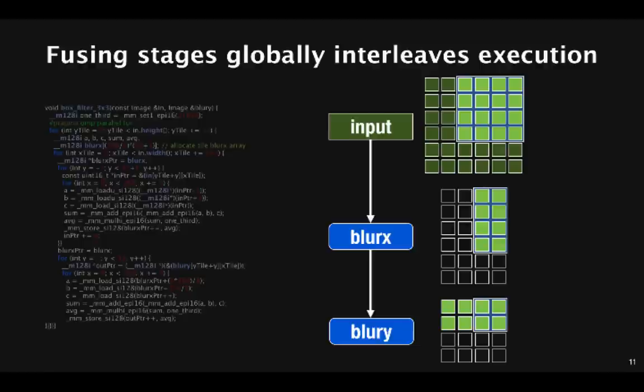This improves producer-consumer locality by keeping all the intermediate data nearby in local caches, but it's made optimization a global problem of carefully interleaving the computation and storage down an entire imaging pipeline. You can't address locality just by optimizing stages in isolation or by just tweaking operations in your inner loops.